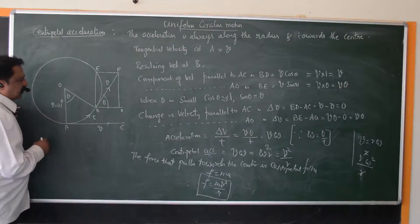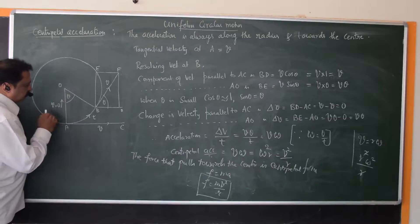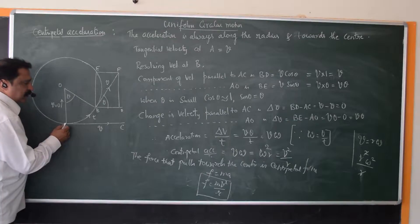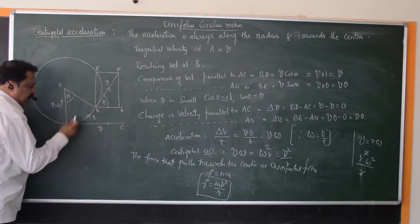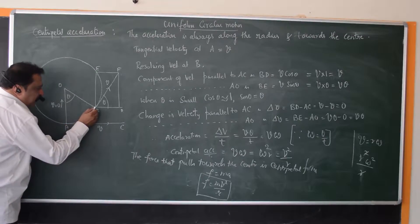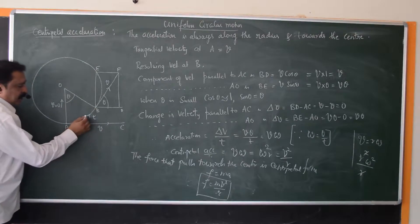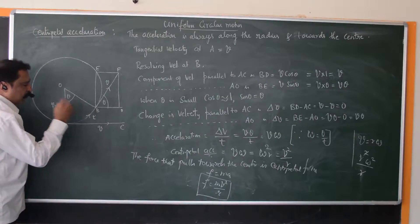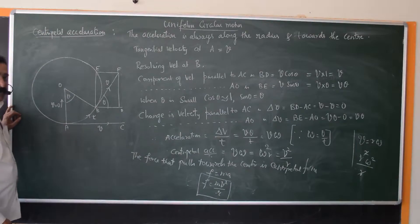Now let's look at this diagram. Consider a particle at A, like the example of a stone tied to a string that has started whirling. Now the stone travels from A to B. Let it come to point B by taking T seconds time. To come from point A to B, the stone takes a time of T seconds.